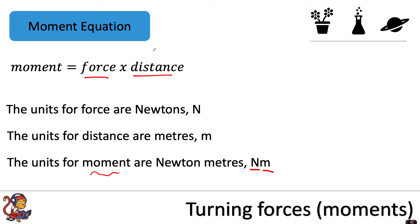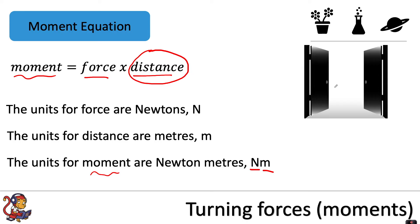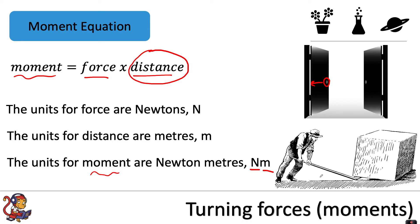If you have a bigger distance from the pivot, you will experience a bigger moment. That is why door handles are positioned furthest away from the pivot, and it's the reason why we would use long-handled bars to move heavy objects, just like in this diagram.